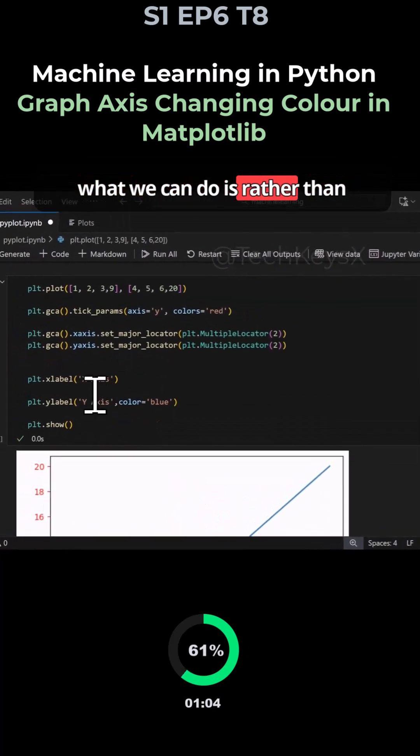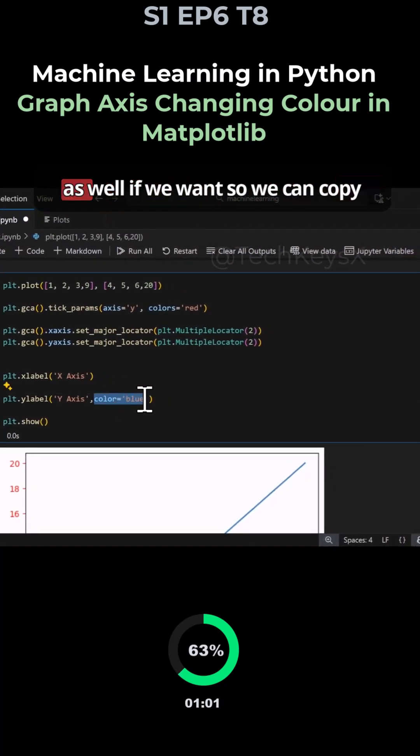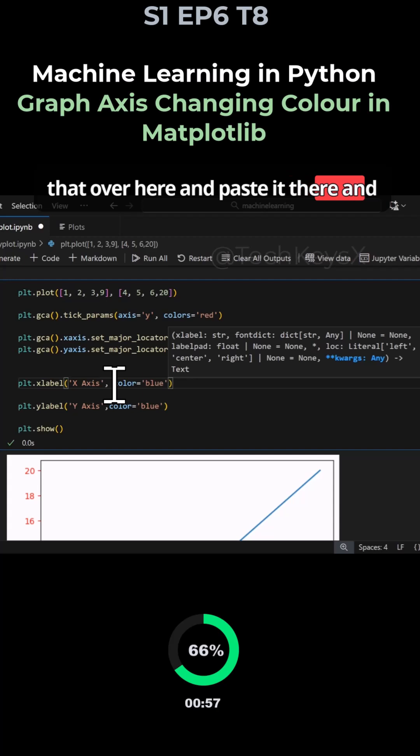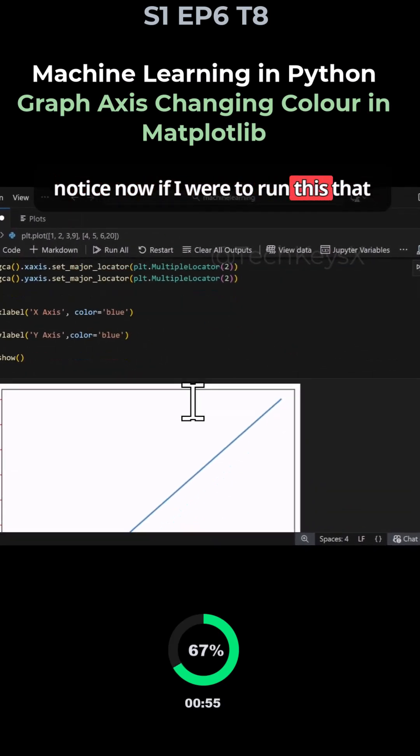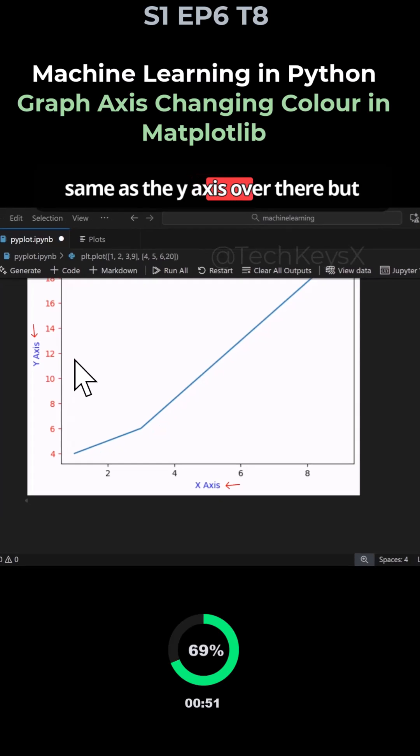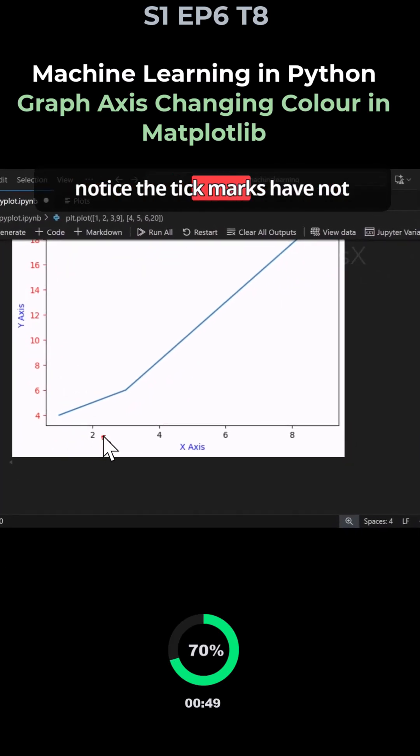What we can do is rather than specifying, we can change this to blue as well. We can copy that over here and paste it there, and notice now if I were to run this, all our labels have changed to blue same as the y-axis over there. But notice that tick marks have not changed the color.